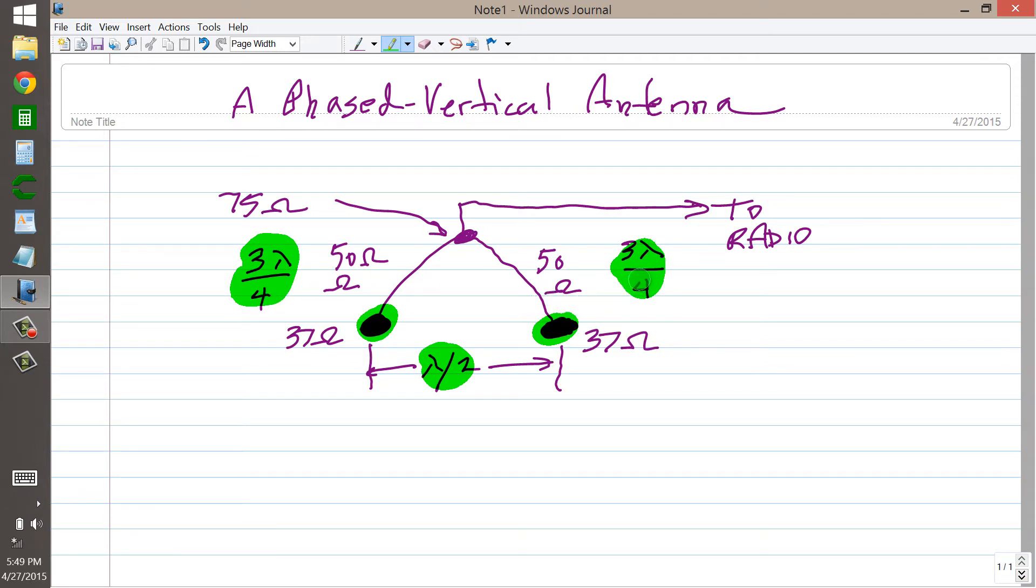Three quarters of a wavelength section will behave just exactly the same as a quarter wavelength matching section. So you'll get an impedance here of roughly 75 ohms. 37 is to 50, as 50 is to whatever you get here. And where does this 37 come from? Well, I'm assuming that you have a fabulous radial system, and your antenna is ground mounted, so that the feed point impedance at the base of these quarter wavelength vertical antennas is roughly 37 ohms.